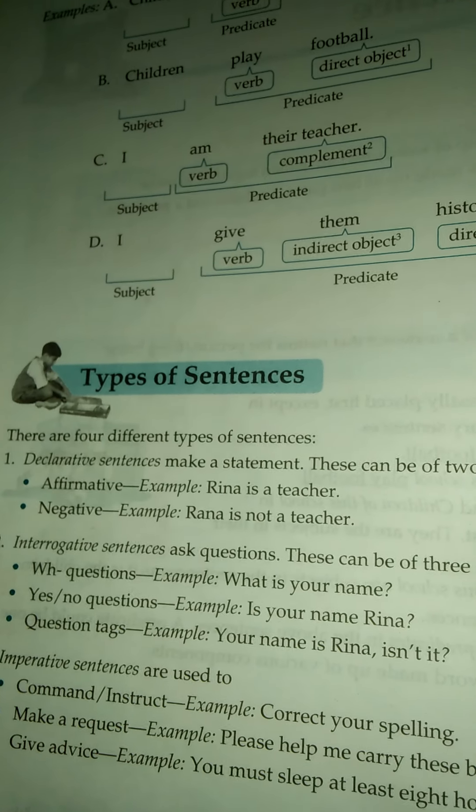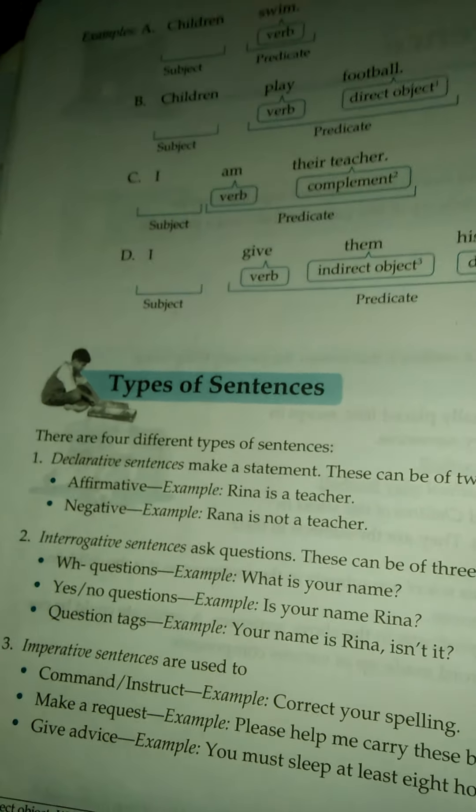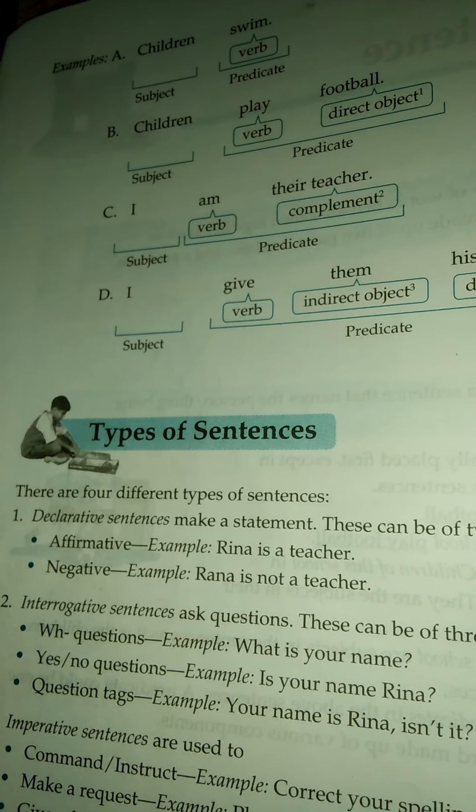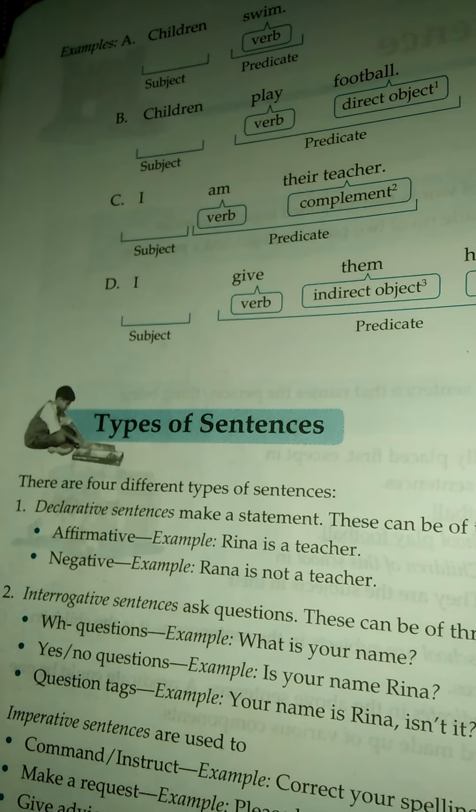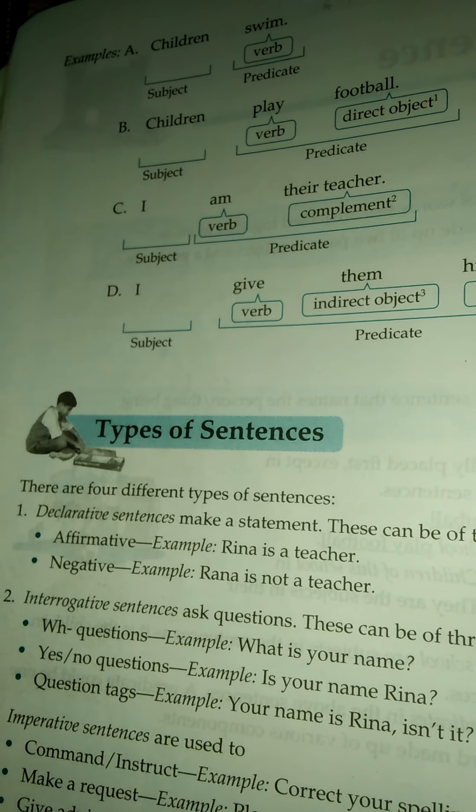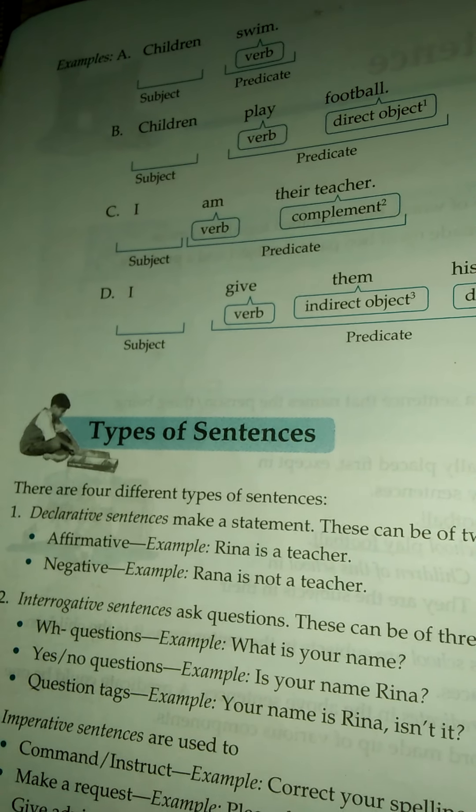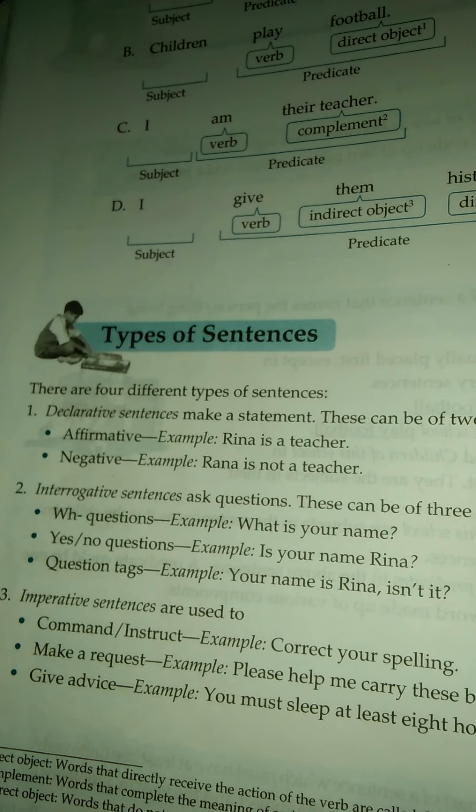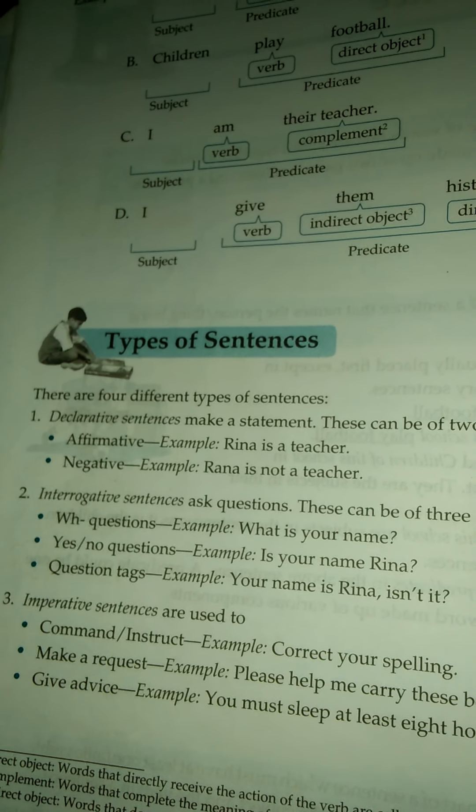There are four different types of sentences. Number one, declarative sentence. Declarative sentence makes a simple statement. We are playing. They are going. We should work hard. Second, interrogative sentence that asks questions.